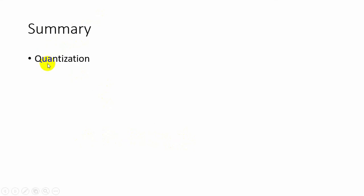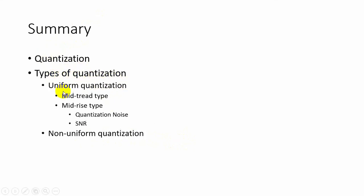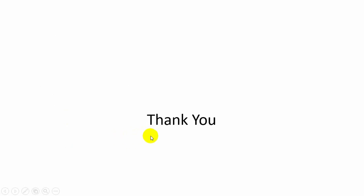In this video, we have discussed quantization and its types. The first type is uniform quantization, covering mid-tread type and mid-rise type, along with quantization noise and signal-to-noise ratio at the output. The second type discussed is non-uniform quantization. Thank you for watching this video.